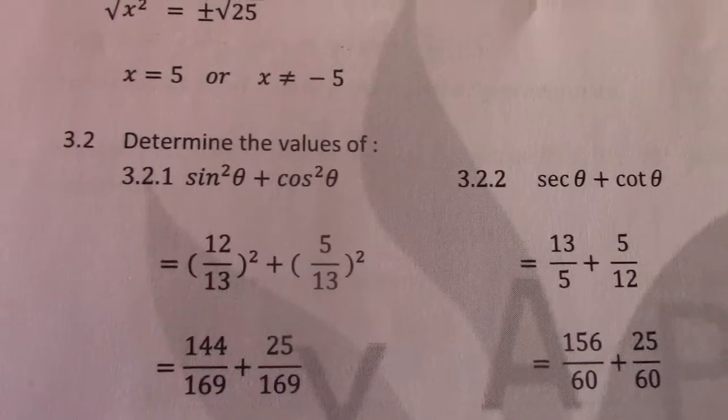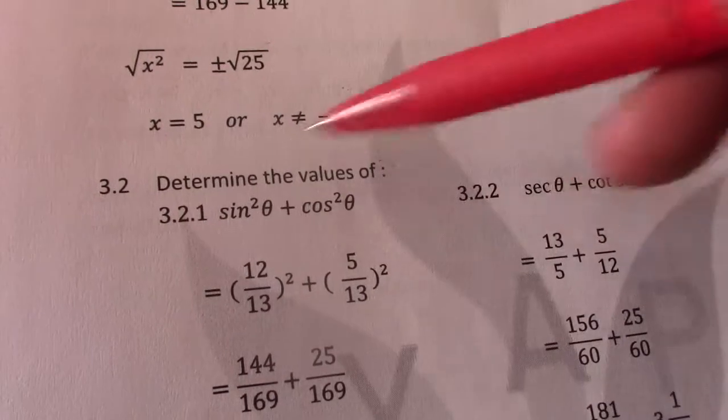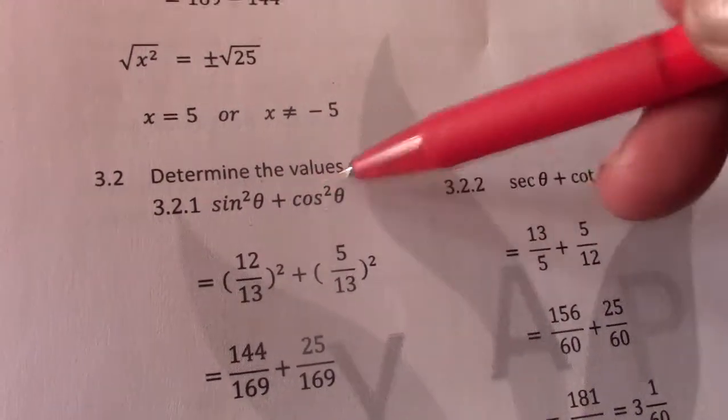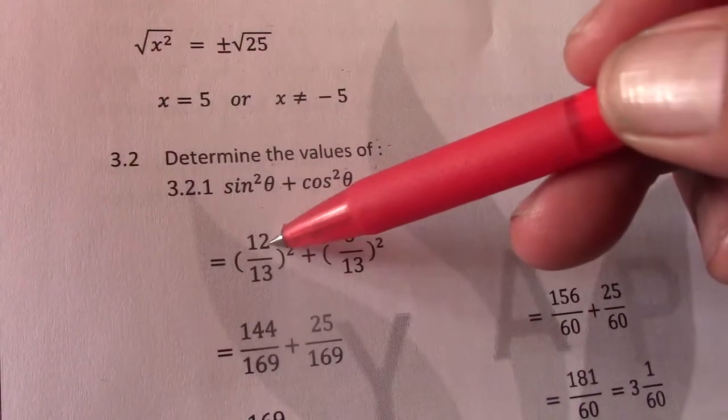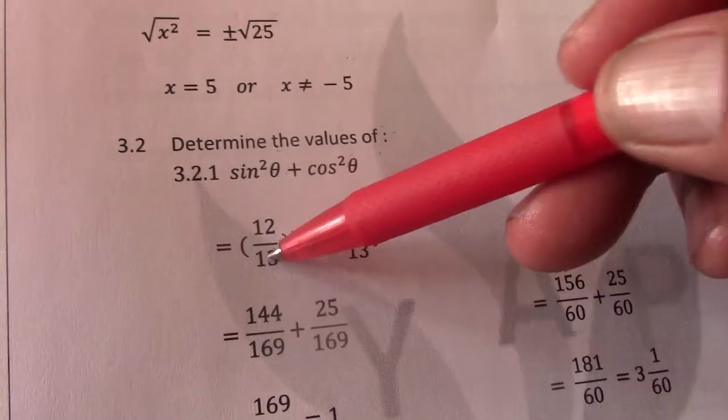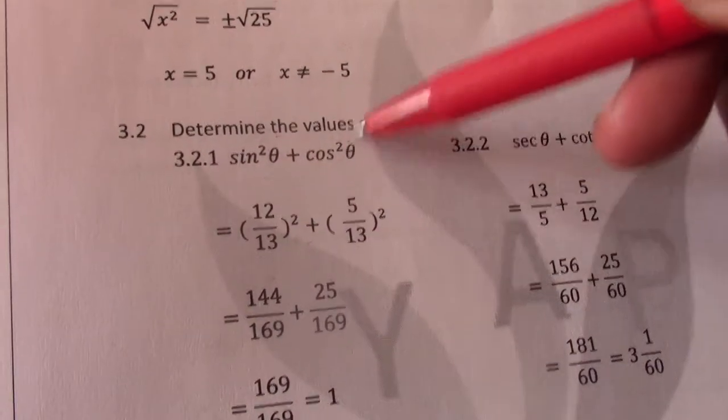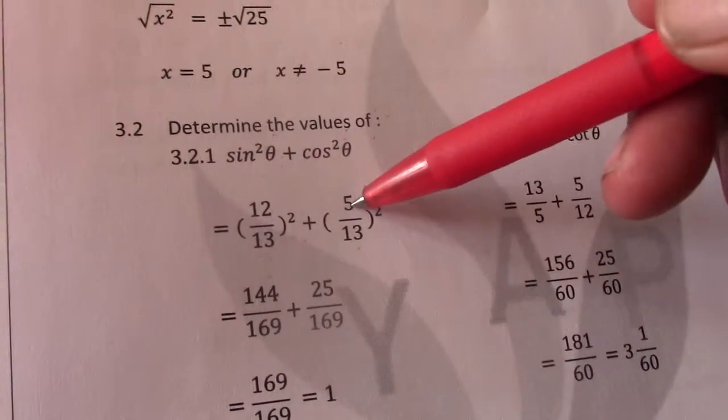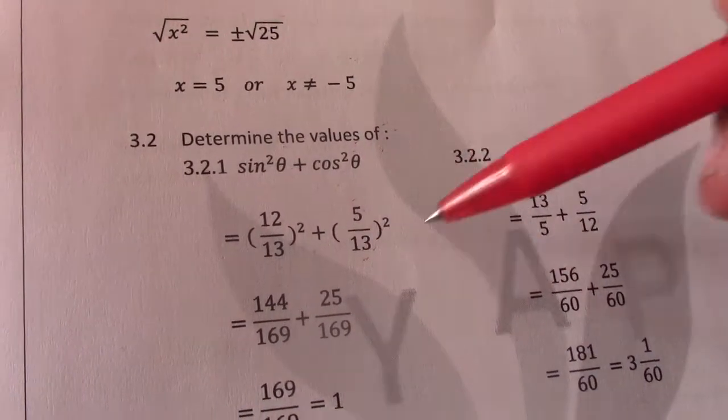So now once we have X Y and R we can actually then go on to the easy part answering the question. So there first determine the values of sine squared theta plus cos squared theta. So sine squared theta Y over R. My Y value is 12. My R value is 13. So that becomes 12 over 13 squared because there they say it's sine squared theta plus cos squared is X over R. My X value is 5. My R value is 13. So that's 5 over 13 squared.